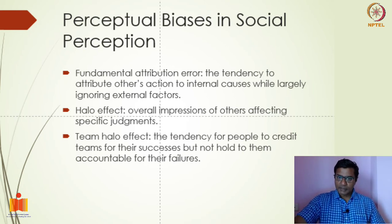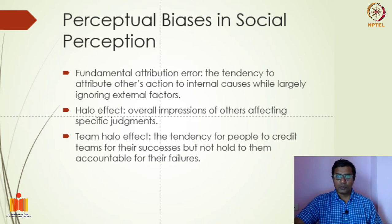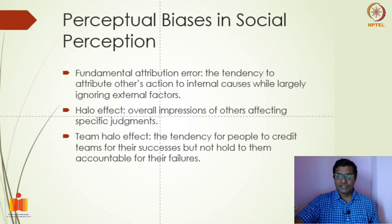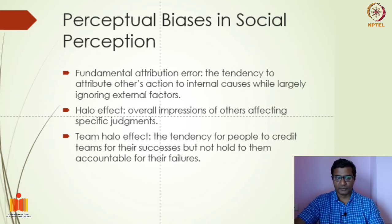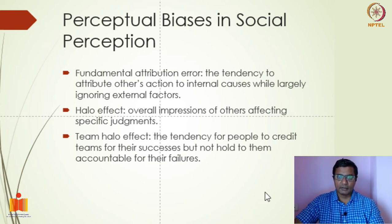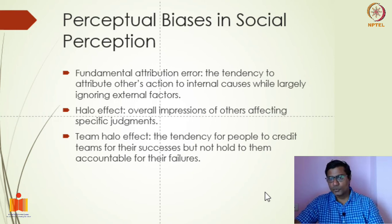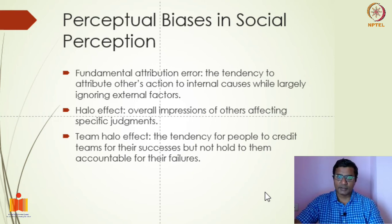One important implication of social perception — one reason why we should understand social perception in the workplace — is the negative impact of social perception, or the perceptual biases which can happen in a social context because of social perception. There are many biases. Biases mean unbalanced or one-sided things.